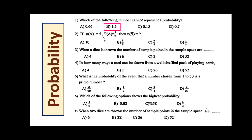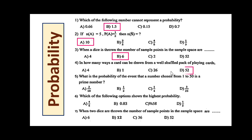If N(A) = 5 and P(A) = 1/2, then N(S) = 5 × 2 = 10. When a dice is thrown, the number of sample points in the sample space is 6. In how many ways can a card be drawn from a well-shuffled pack of playing cards? There are 52 cards, so the answer is D.